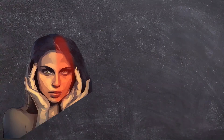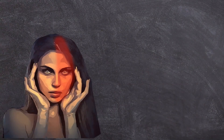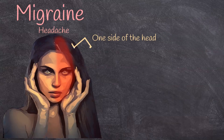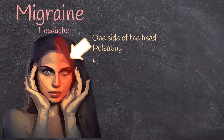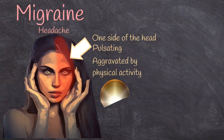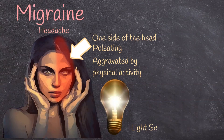Migraine is recurrent headaches of moderate to severe intensity. The pain usually affects one side of the head and is pulsating in nature. It is aggravated by physical activity and associated with nausea and light and sound sensitivity, photophobia and phonophobia.